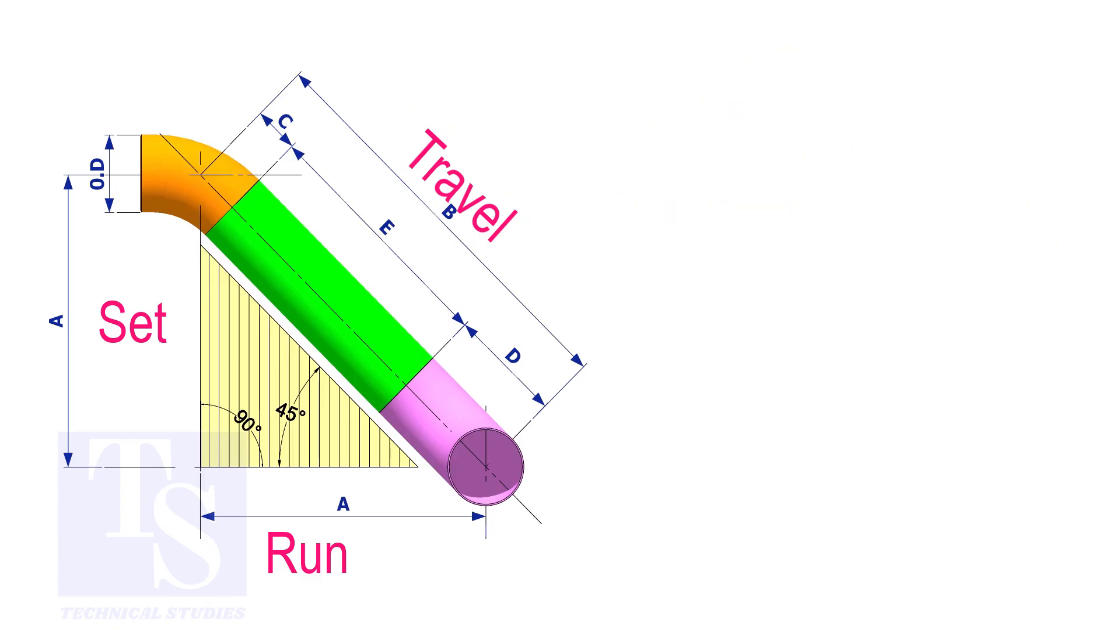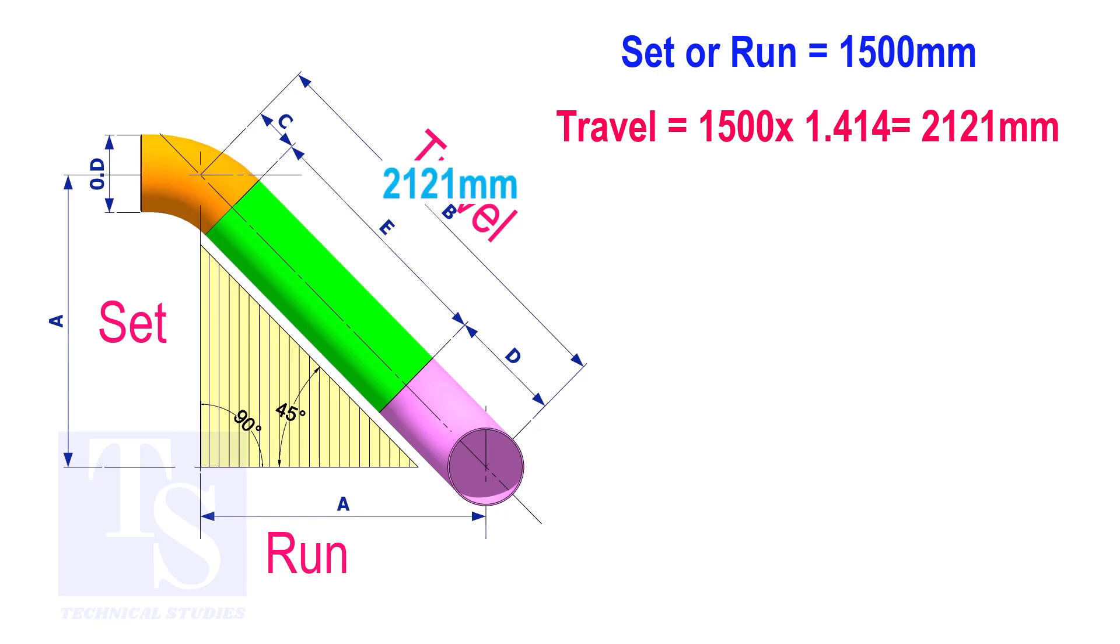Try another example. Suppose the value of the set or the run is 1500 millimeters. The value of the travel will be 1500 multiplied by 1.414 equals 2121 millimeters.